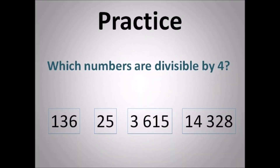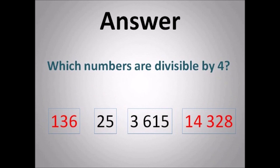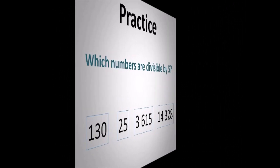Which numbers are divisible by 4? Remember the rule: the last two digits must be divisible by 4. So in 136, the last two digits 36 are divisible by 4. In 14,228, the last two digits 28 are divisible by 4. 25 is not, and 3615 — the last two digits 15 are not divisible by 4. So look at the last two digits to make sure they're divisible by 4.